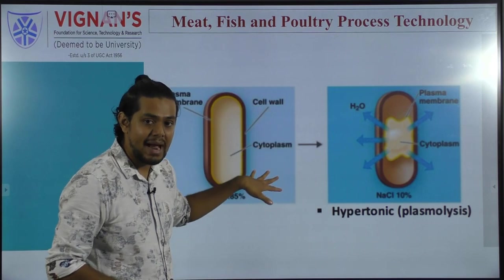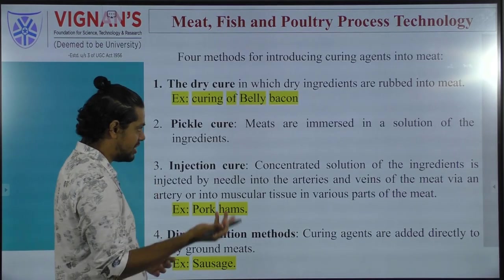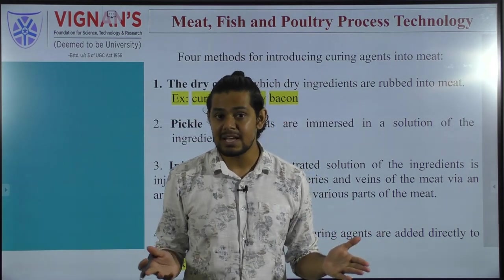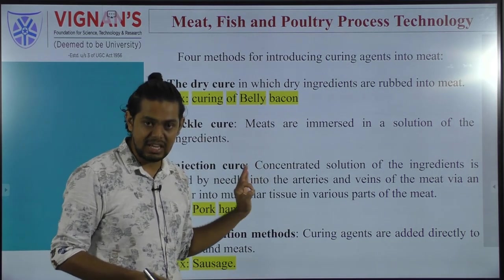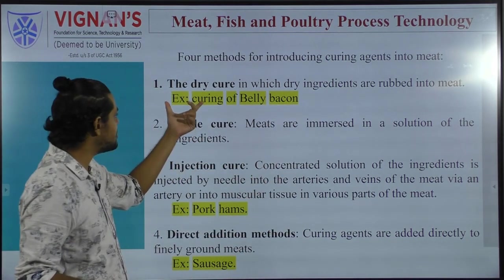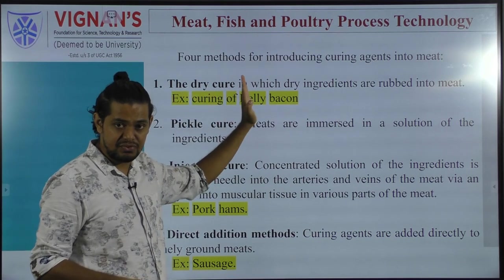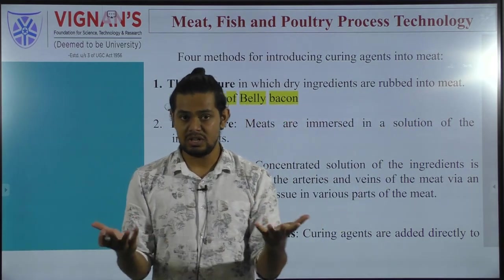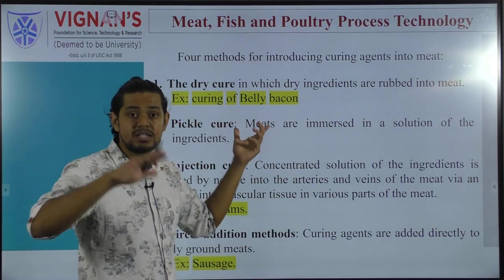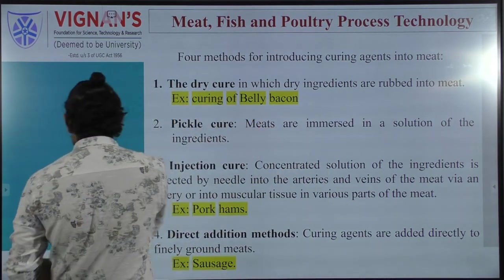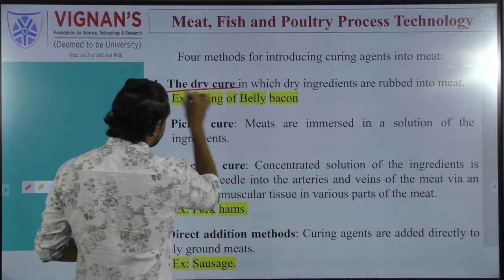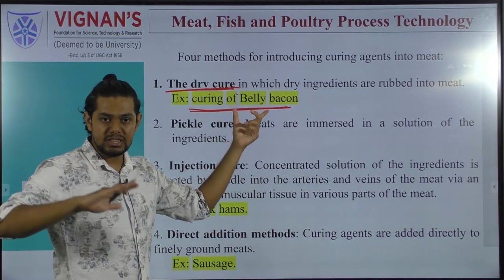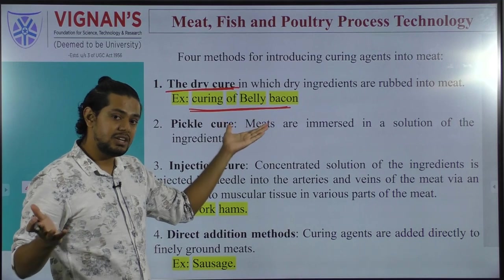The addition of salt checks water activity, making water unavailable for microorganisms and leading to plasmolysis which kills them. This is an important technique practiced in the meat and food industry. There are four distinct methods by which salt can be added to meat and meat products. The first is dry cure, where dry ingredients are rubbed on the meat surface — for example, the curing of the belly of a bacon.